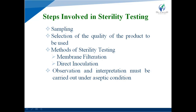In the membrane filtration method, a filter made up of ester or a mixture of ester and cellulose is used. Pore size of 0.45 micrometer is maintained and diameter of 50 mm is used. Adjust the sterilized filter assembly and filter under aseptic conditions. Transfer the membrane directly or cut into pieces into culture media and incubate — for bacteria, 20 to 25 degrees centigrade; for fungi, 30 to 35 degrees centigrade — for a 7-day period.